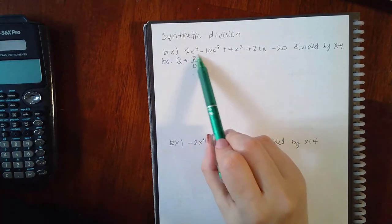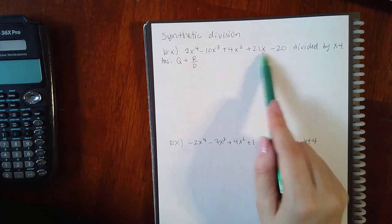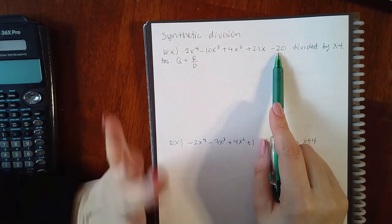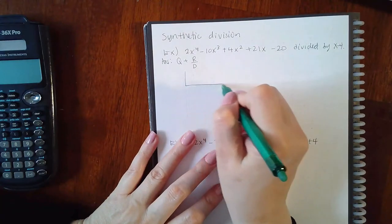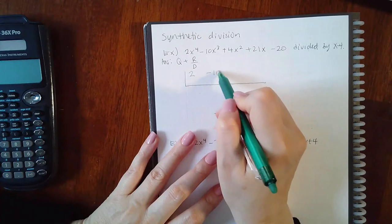For the first problem, you have to make sure this is in descending order. I have x to the fourth, x cubed, x squared, x, and a constant. This is in descending order and no term is missing, so I'm going to write all those coefficients here inside this box.